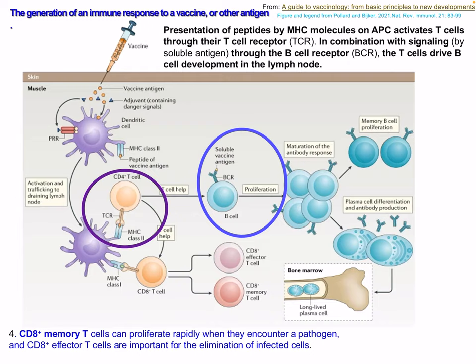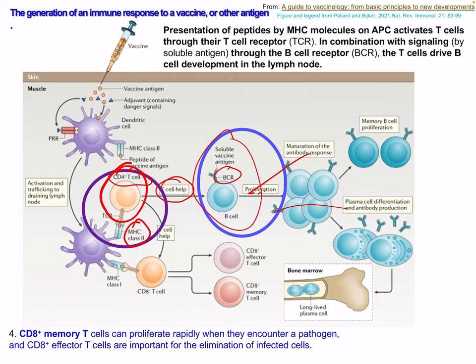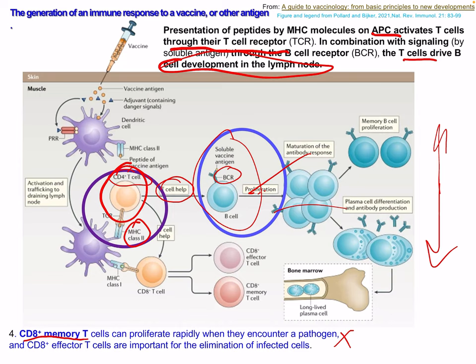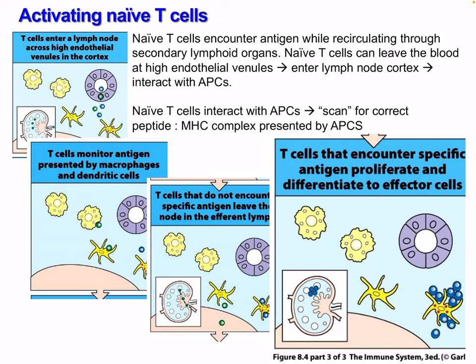Without CD4, we won't get a good B cell response. Without class 2, we don't get our T helper cell response, which means no T cell help for B cells — therefore proliferation and all those steps don't happen. Presentation of peptides by MHC molecules on antigen-presenting cells activates T cells through the T cell receptor. In combination with signaling through the T cell receptor, T cells drive B cell development in the lymph node. With loss of class 1 or class 2, all these functions will be affected.